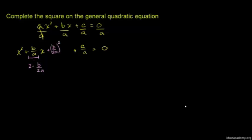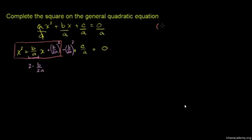Of course I can't just add something to one side of the equation — that would change the equation. I also either have to add it to the other side or subtract it from the same side. So I'll also subtract b over 2a squared just like that. Now, the whole point of doing this is so these first three terms are a perfect square trinomial. That's what completing the square is all about. If I have m plus n squared — using m and n so we don't get confused — that's going to be equal to m squared plus 2mn plus n squared.